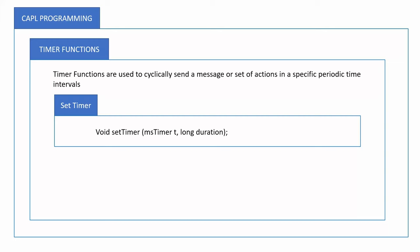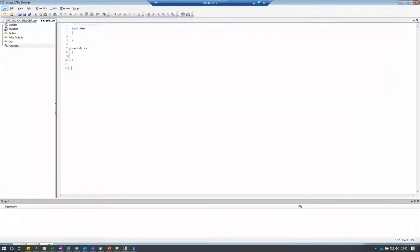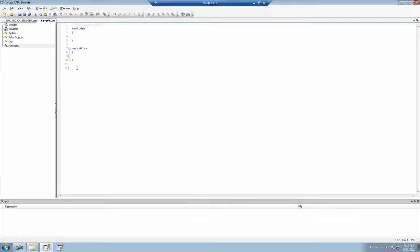The set timer function can be used to cyclically send the message at a specific defined time interval. The syntax is: void setTimer with two arguments — the first argument is the timer name, and the second argument is the duration, which defines how frequently you want to execute this function in a recurrent manner.